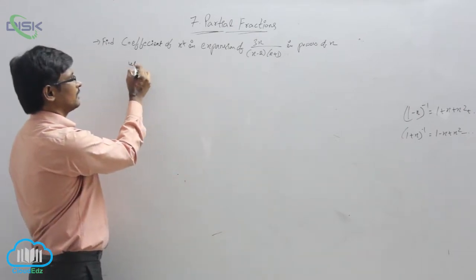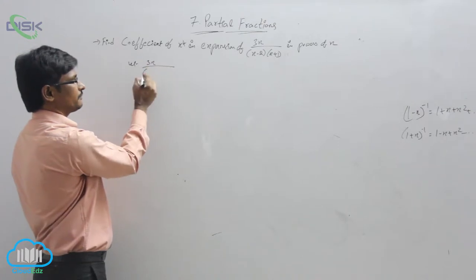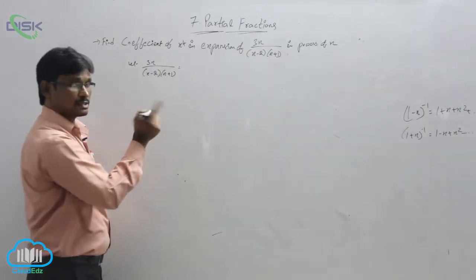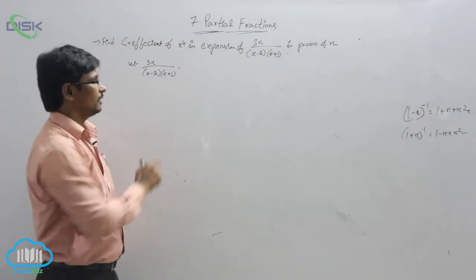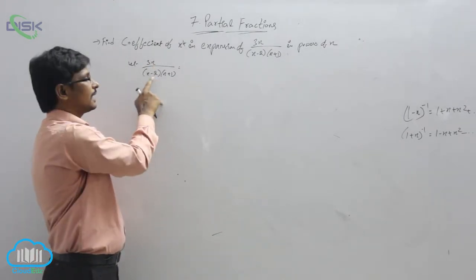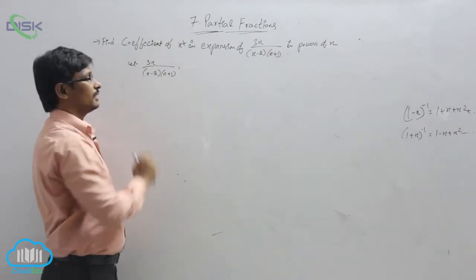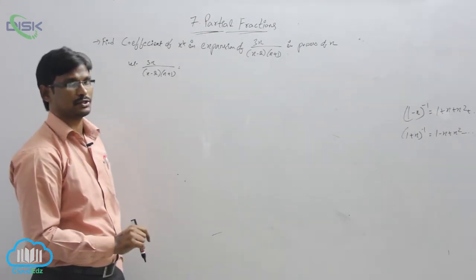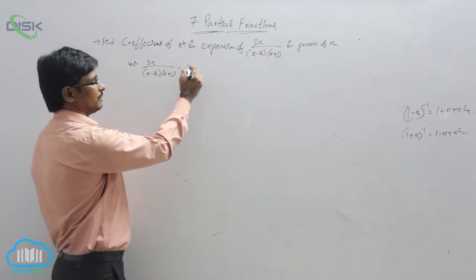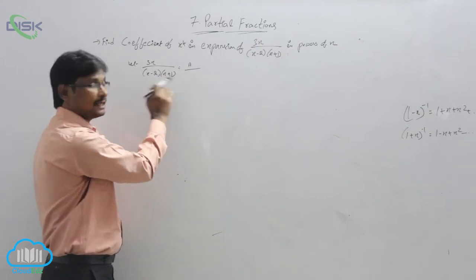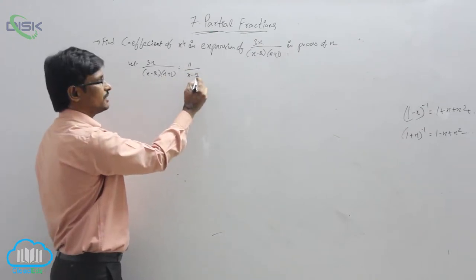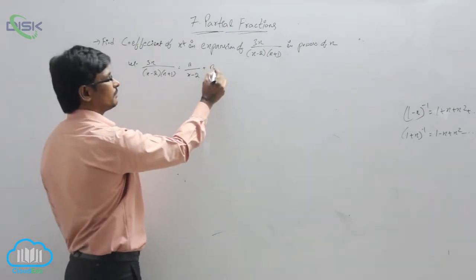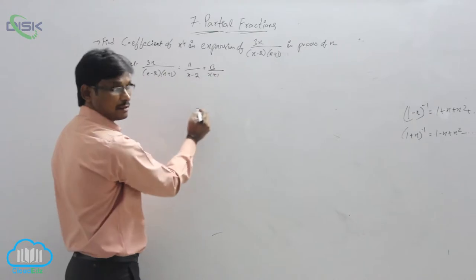Let 3x over (x minus 2)(x plus 1) equal to the partial fraction form. First, observe whether it is proper or improper. The degree of the numerator is 1 and the degree of the denominator is 2, so clearly this is a proper fraction. So as usual, we write it as A over (x minus 2) plus B over (x plus 1).